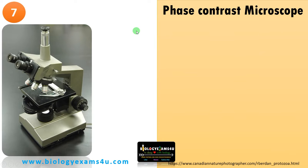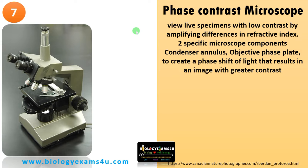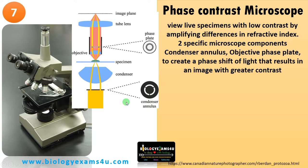Seventh in the list is the phase contrast microscope. It is used to see live specimens with low contrast by amplifying differences in refractive index. There are two specific components: the condenser annulus and the phase plate. The condenser annulus creates a hollow cone of light, and the phase plate converts the phase shift into an intensity shift detected by the objective, enhancing contrast.